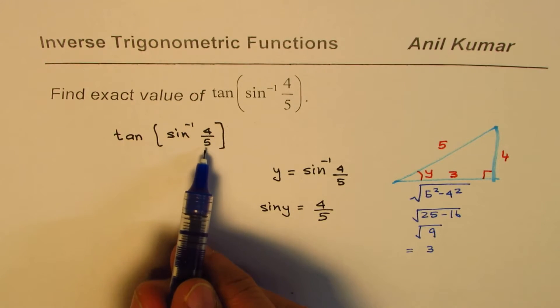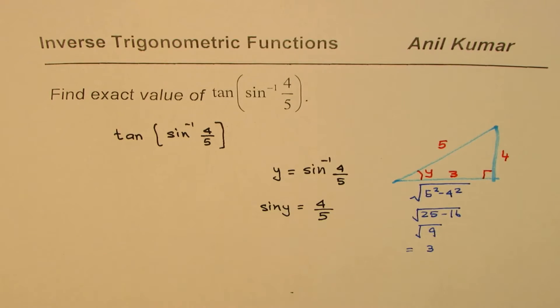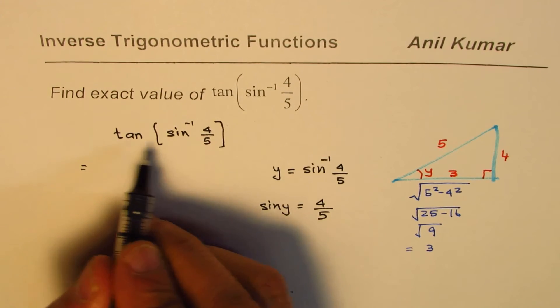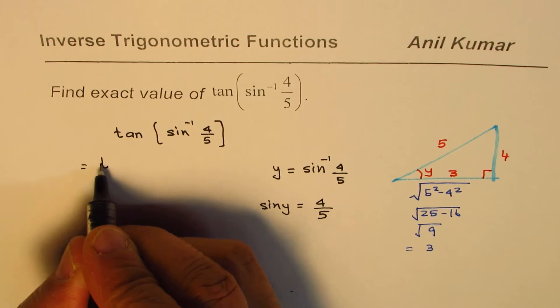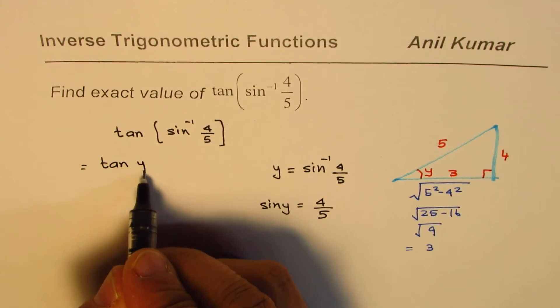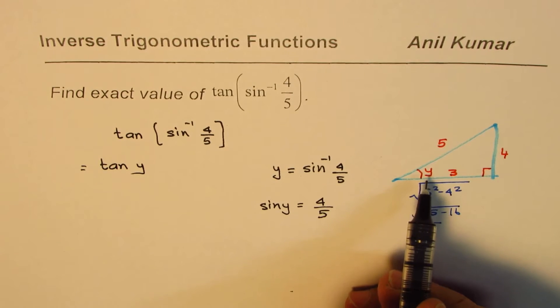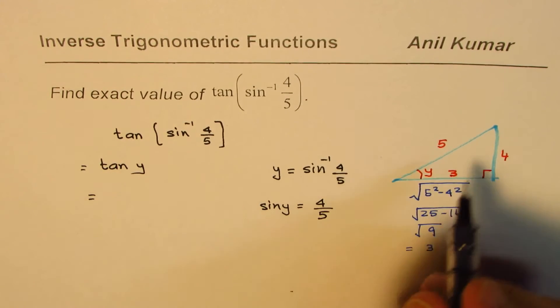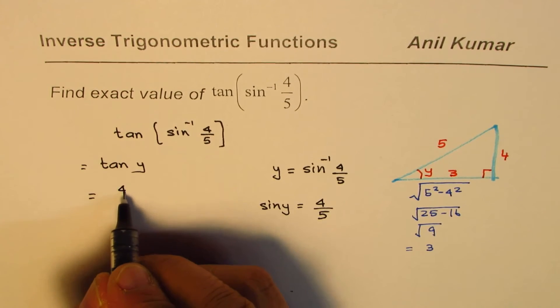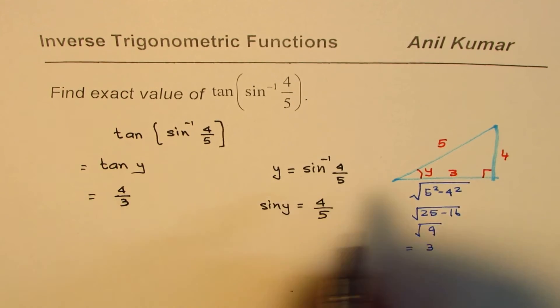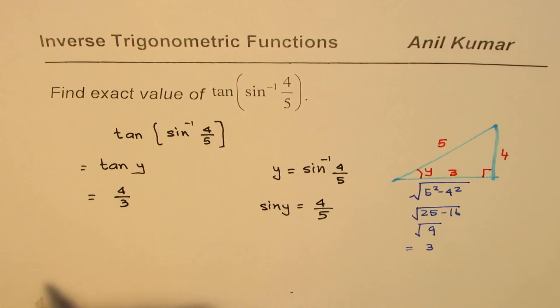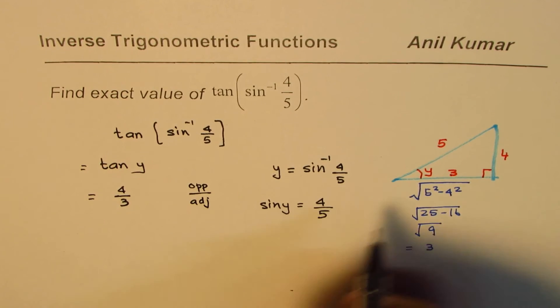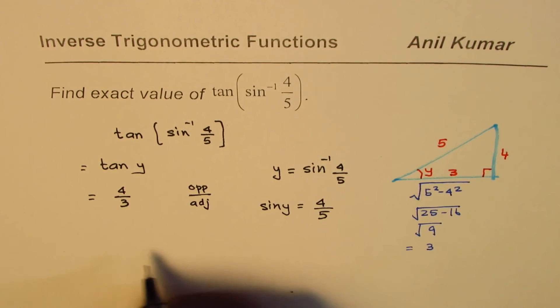Now from here it is very clear that we have sin⁻¹(4/5) written as y. Therefore, I can write the given expression tan(sin⁻¹(4/5)) as tan(y). Now in this triangle, what is tan(y) equal to? Tan is opposite over adjacent, so it is 4/3. So we get the value 4/3 as our answer.